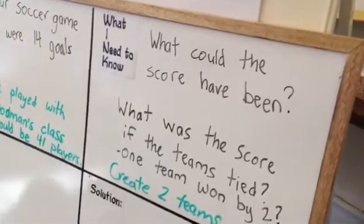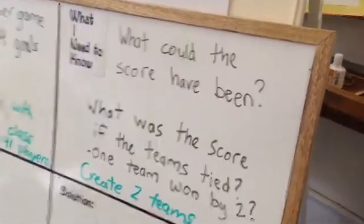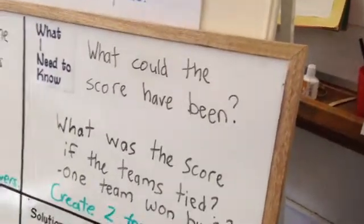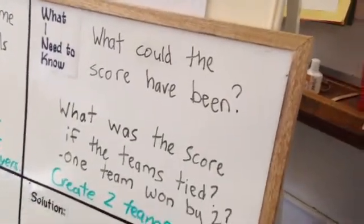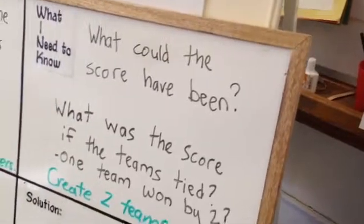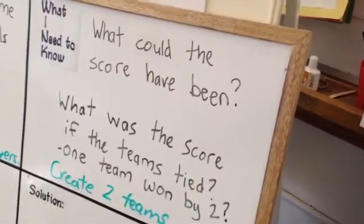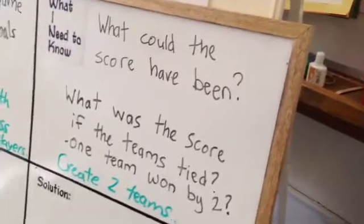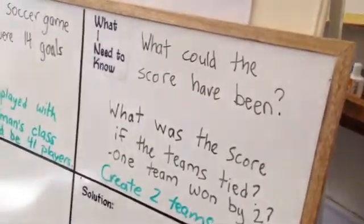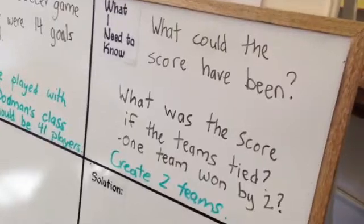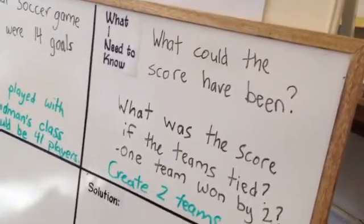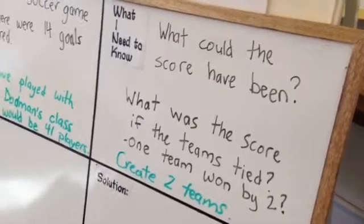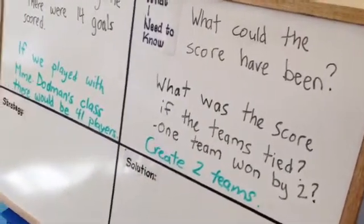So, how many goals were scored in the game? 14. So does that mean there would be more than 14 goals scored? No. Would there be less than 14 goals scored? There would be just 14 goals scored, right? So knowing that there are only 14 goals scored, and knowing what we've worked on the last two days in math, we're going to use that knowledge to figure out what those scores might be.